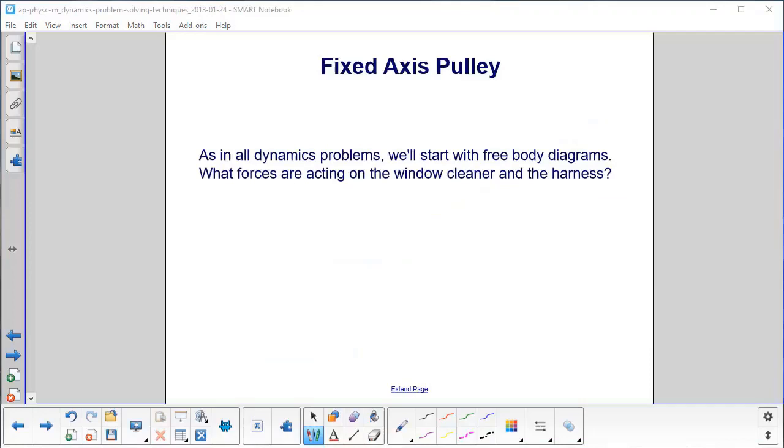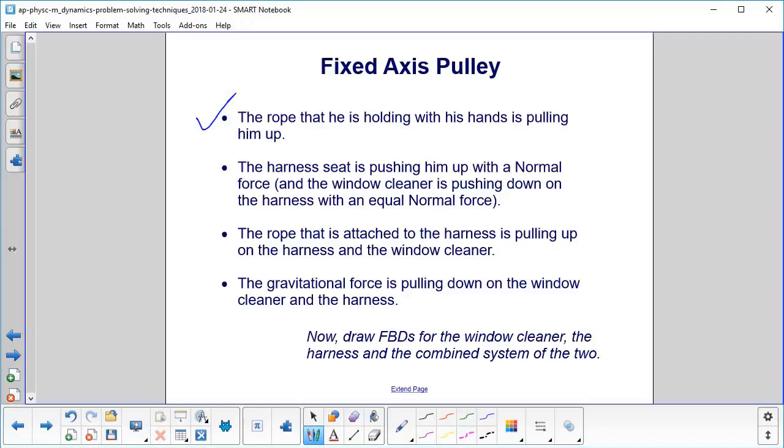As with all dynamics problems, we'll start with free body diagrams. What forces are acting on the window cleaner and the harness? First force, the rope that he is holding with his hands is pulling him up and that is a tension force. The harness seat is pushing him up with a normal force. The window cleaner is pushing down on the harness with an equal normal force, Newton's third law. In addition, the rope that is attached to the harness is pulling up on the harness and the window cleaner. And of course, gravity pulling down on the window cleaner and the harness. Now go ahead and draw free body diagrams for the window cleaner, the harness, and the combined system of the two.